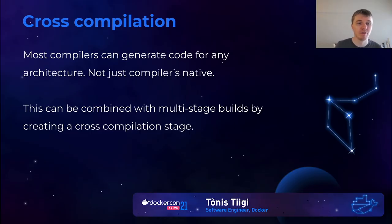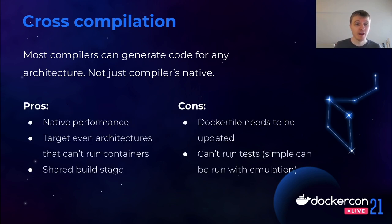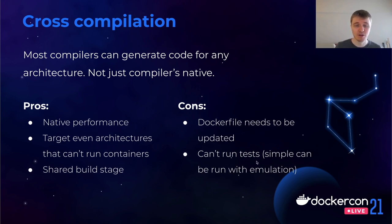Another interesting way to build for multiple platforms is cross-compilation. We use the fact that most compilers can already generate code for any architecture, so you don't actually need to run your compiler inside an emulator or on a specific machine. This can be combined with multi-stage builds by defining a cross-compilation stage. The benefit is that you always get native performance and can target lots of architectures — essentially anything your compiler supports.